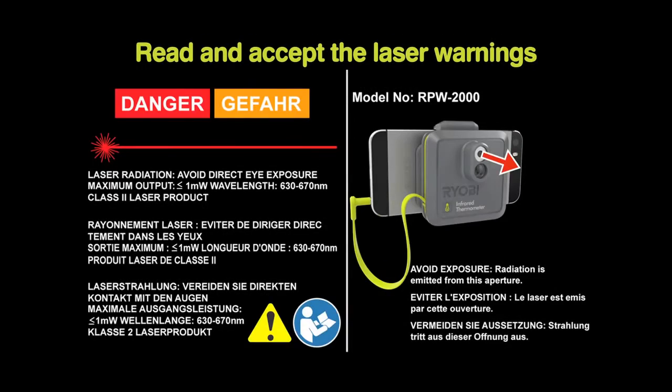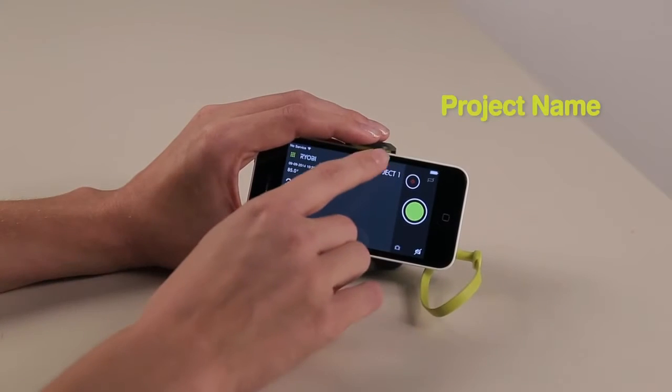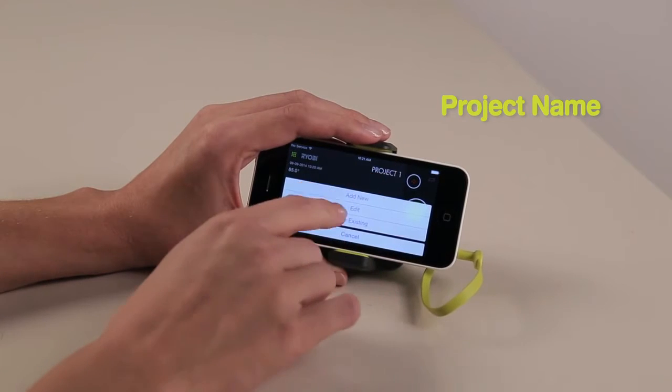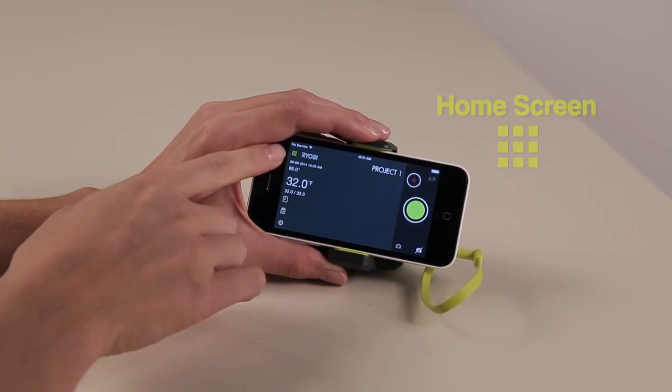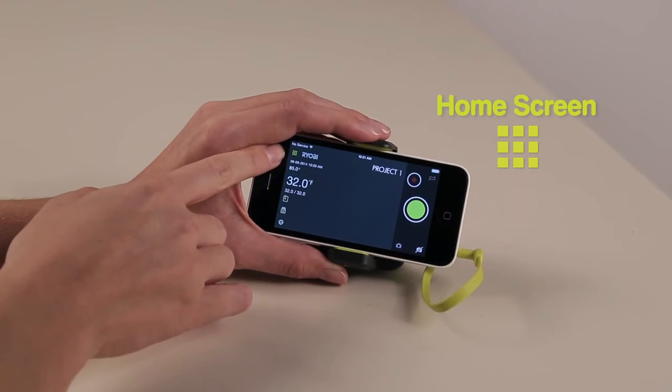You will then be prompted to read and accept the laser warnings. To add or change the project name, tap Project 1 or current project name on the screen and then type in the desired name. If at any time you want to go back to the home screen of the Ryobi PhoneWorks app, touch the home screen icon.